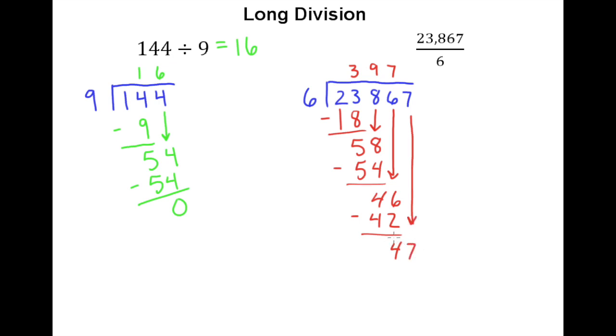6 goes into 47. Again, 7 times. 6 times 7 is 42. Giving you a remainder of 5. But now there are no more digits to drop. And my remainder is not 0 like it was in the last one.